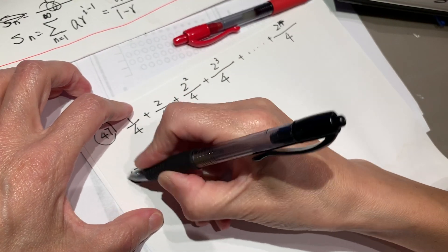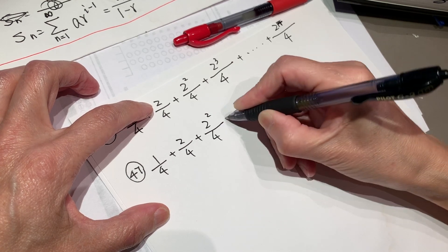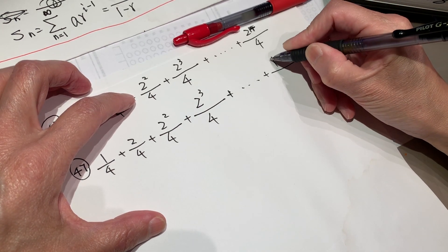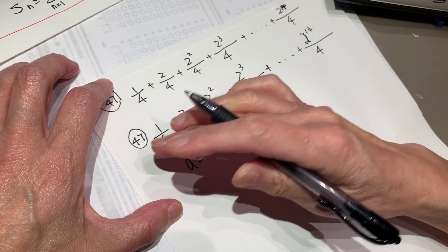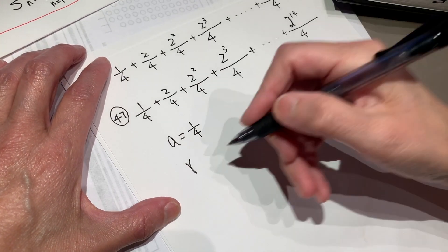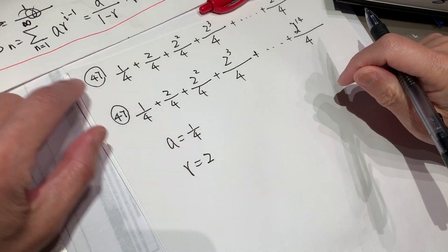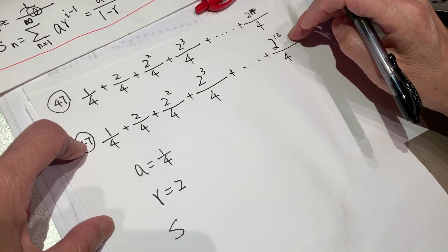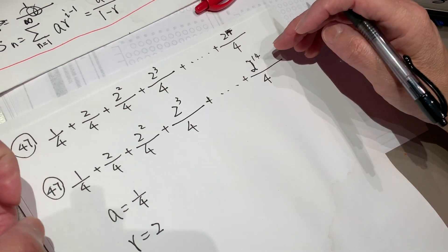Question number 47 — I will copy it. Okay: 1 over 4, 2 over 4, 2 squared over 4, 2 to the power of 3 over 4, until 2 to the power of 14 over 4. So what we know is: this is a geometric sequence, a equals 1 over 4, and r equals 2. And how many terms? Here the last exponent is 14, it means there are 15 terms.